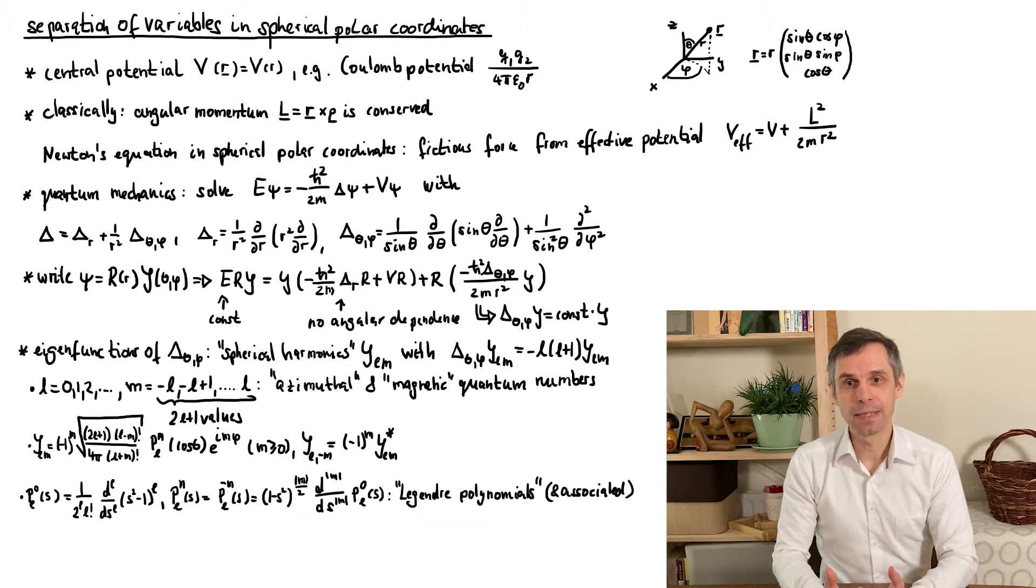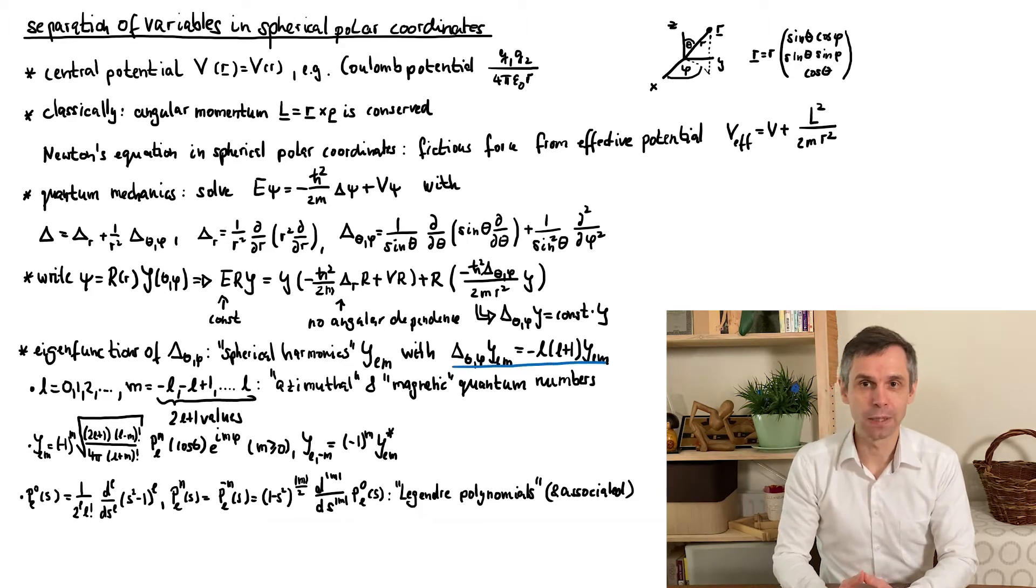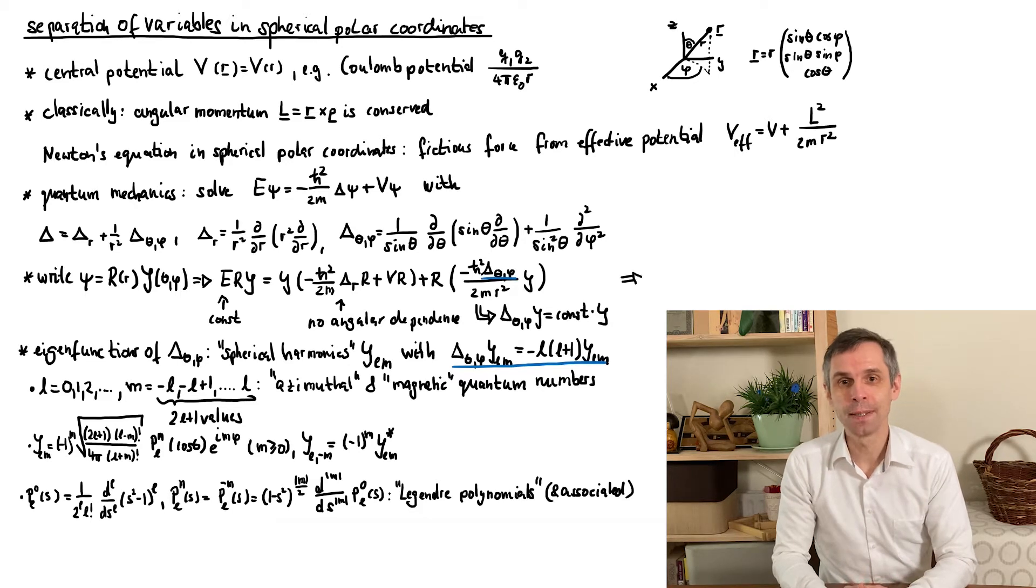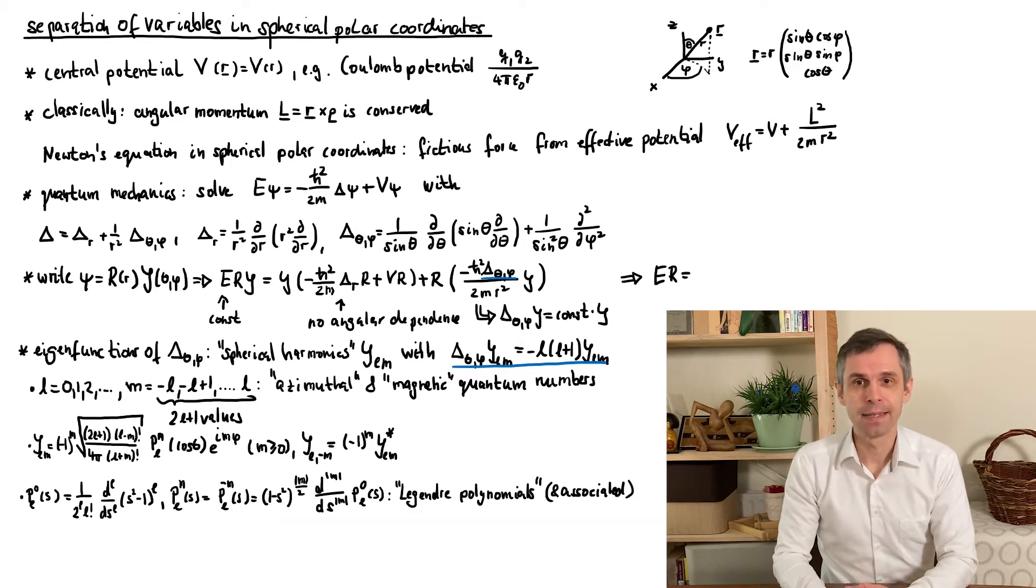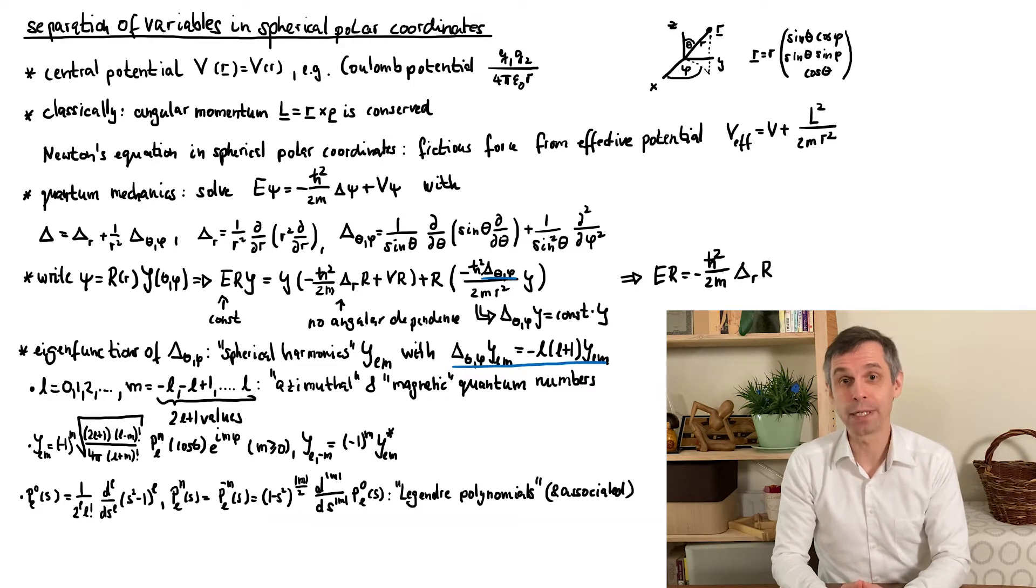Secondly, when we now insert this eigenvalue equation for Y back into the Schrödinger equation, we can cancel Y, and remain with an effectively one-dimensional differential equation for the radial part R.